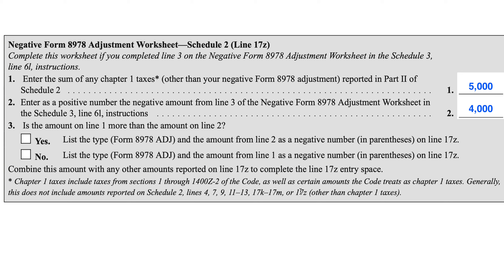Line 17H is income from non-qualified deferred compensation plans that fail to meet Section 409A requirements. This is reported on your Form W-2, Box 12, marked with code Z, or on IRS Form 1099-MISC, Box 15. Line 17I is the additional tax on compensation from non-qualified deferred 457 plans if the compensation would have been includable but for the fact that it wasn't determined until the current tax year. Line 17J covers Section 72(m)(5) Excess Benefits.